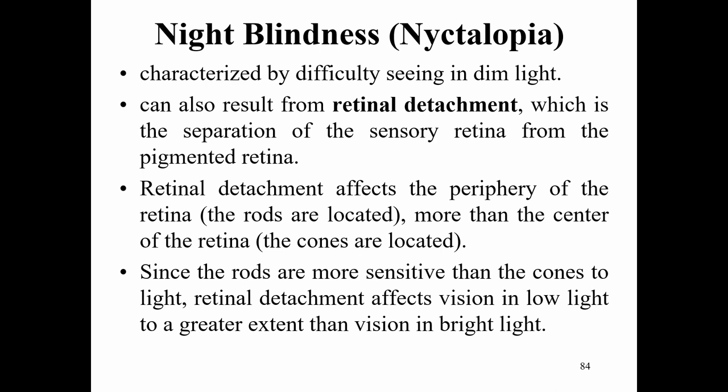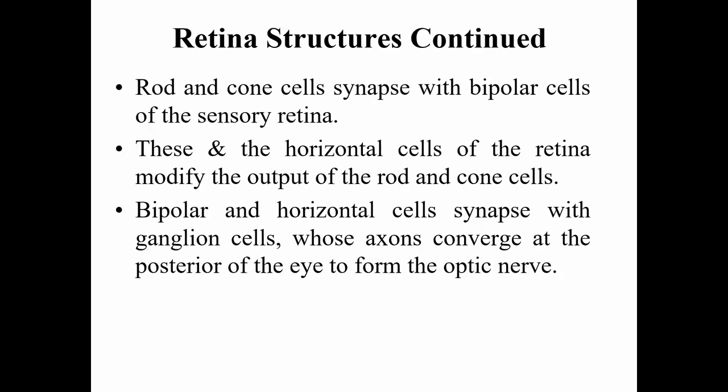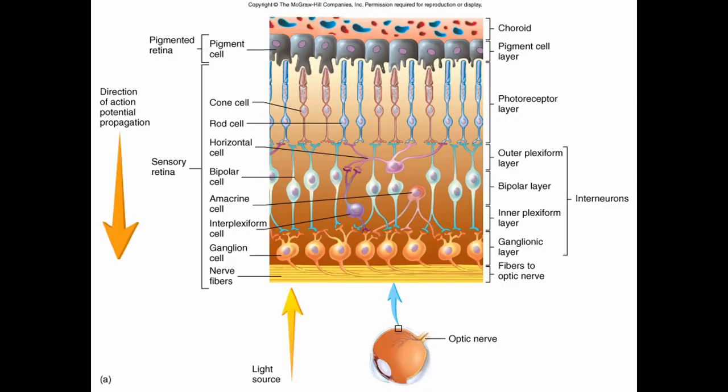Night blindness is characterized by difficulty seeing in dim light and can result from retinal detachment — the separation of sensory retina from pigmented retina. Retinal detachment affects the periphery of the retina more than the center, where the cones are located. Since rods are more sensitive to light than cones, retinal detachment affects vision in low light to a greater extent. Rod and cone cells synapse with bipolar cells; these and horizontal cells modify the output. Bipolar and horizontal cells synapse with ganglion cells whose axons converge to form the optic nerve.